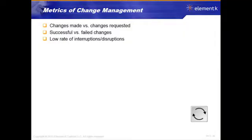Two kinds of thoughts here in patch management. For change management, metrics we can measure include how many changes were requested versus how many were made, how many were successful and how many failed, and what was the rate of disruption or interruption — how many interruptions did the change or the patches cause. We want that number, of course, to stay as low as possible.